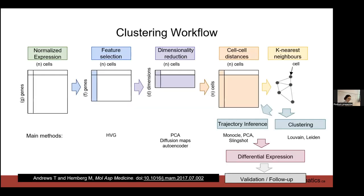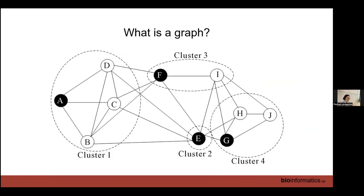Going back to our clustering workflow — we did feature selection and dimensionality reduction yesterday, so now we're going to cover how we define k-nearest neighbor networks and do clustering. We're also not going to cover trajectory inference. There are over 42 tools for that, but PCA ranked number three or five depending on the metric, and was the most consistent performer across different data types — circle trajectories, fork trajectories, straight line trajectories. I generally recommend just use PCA for trajectory analysis.